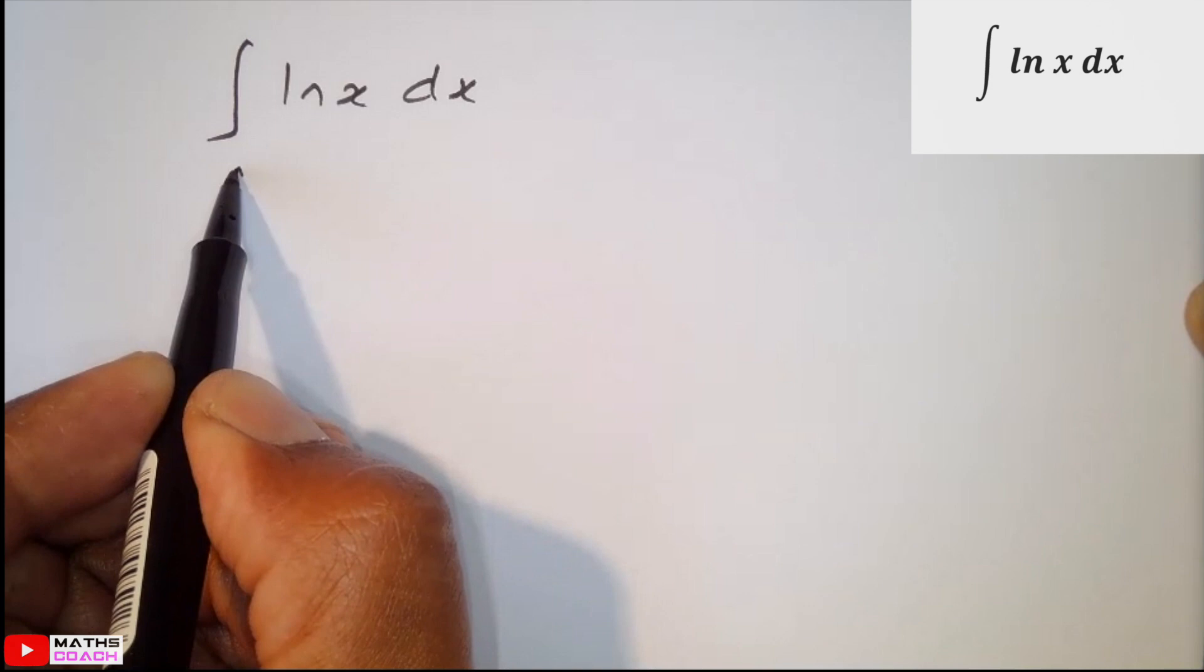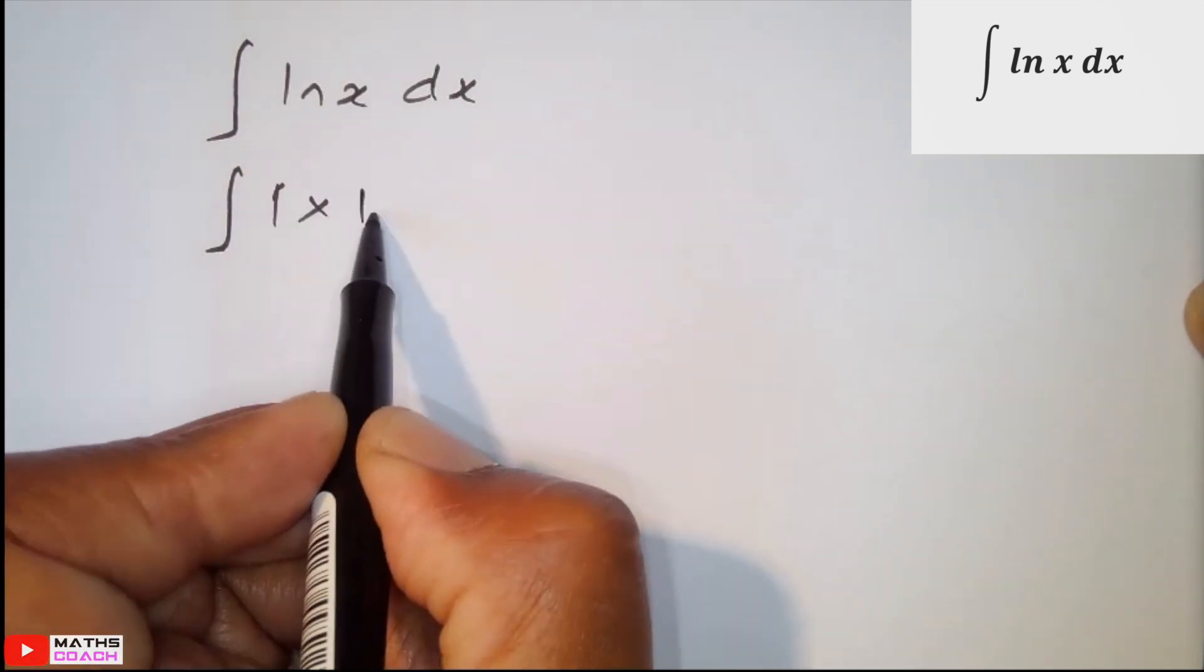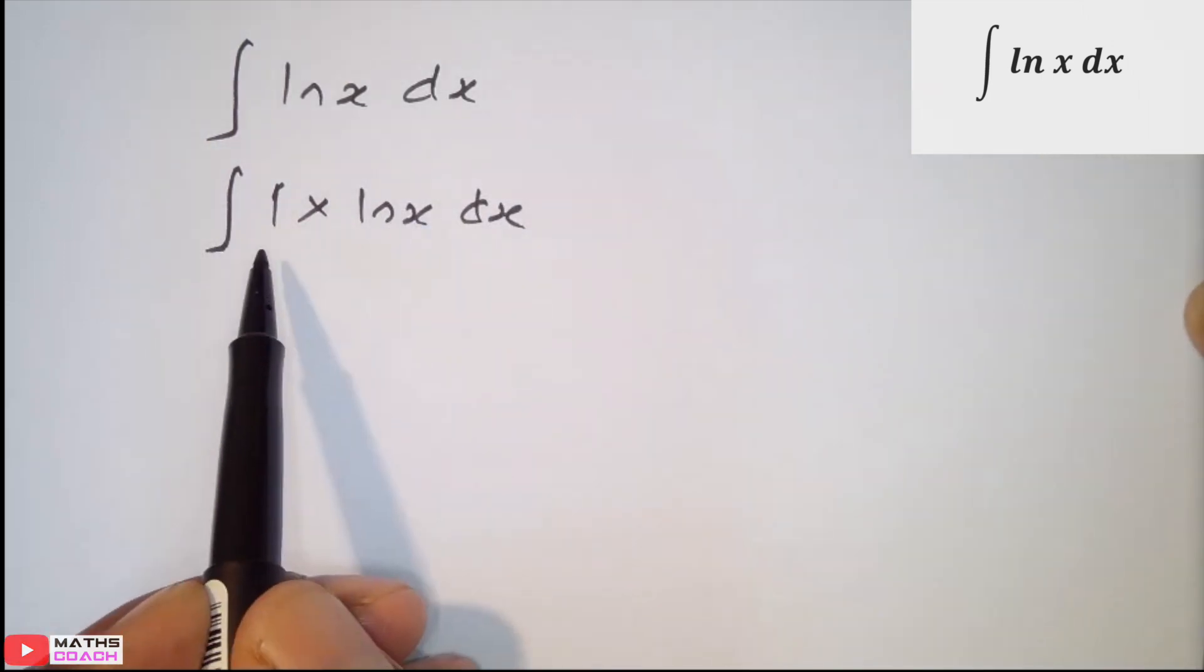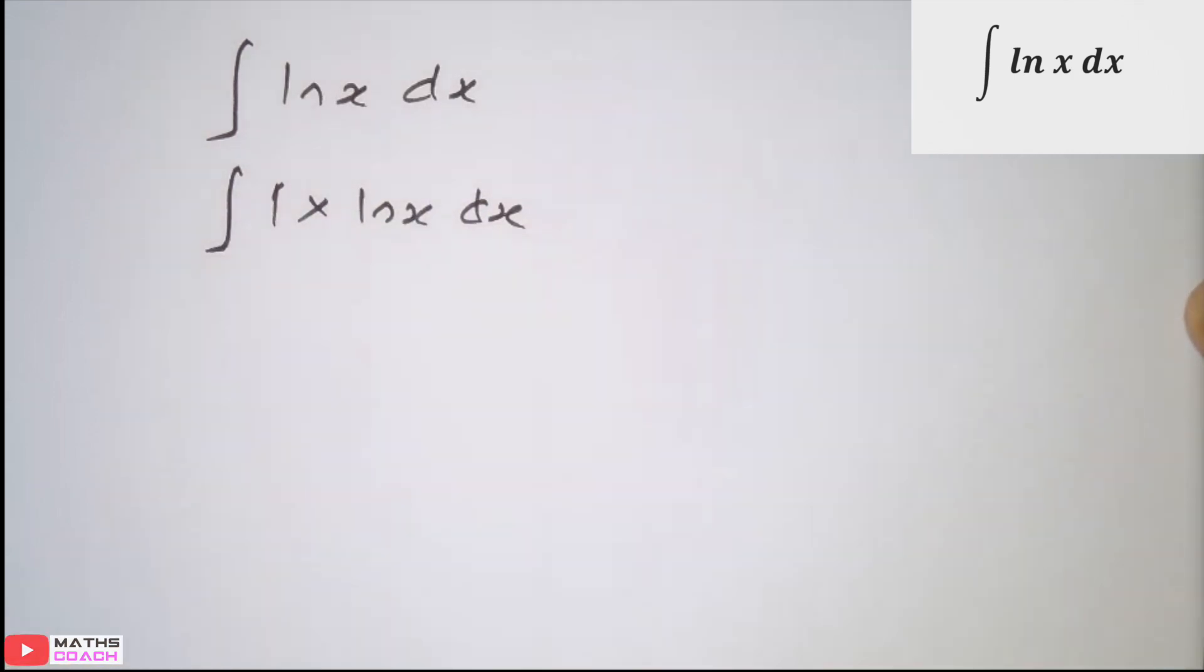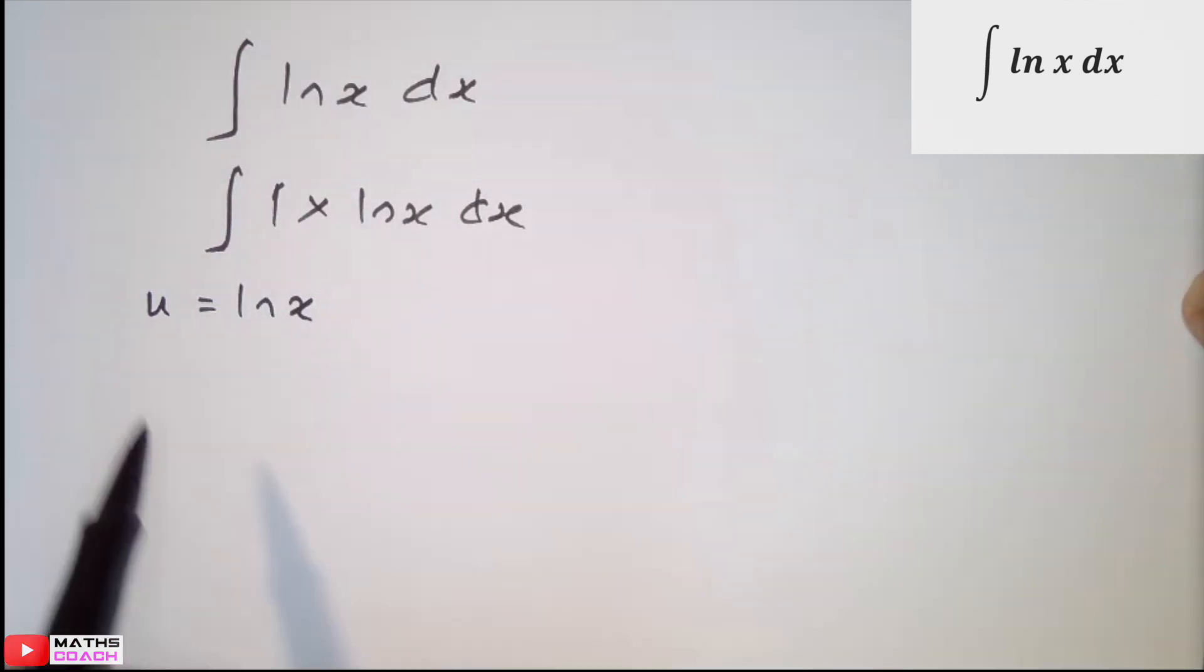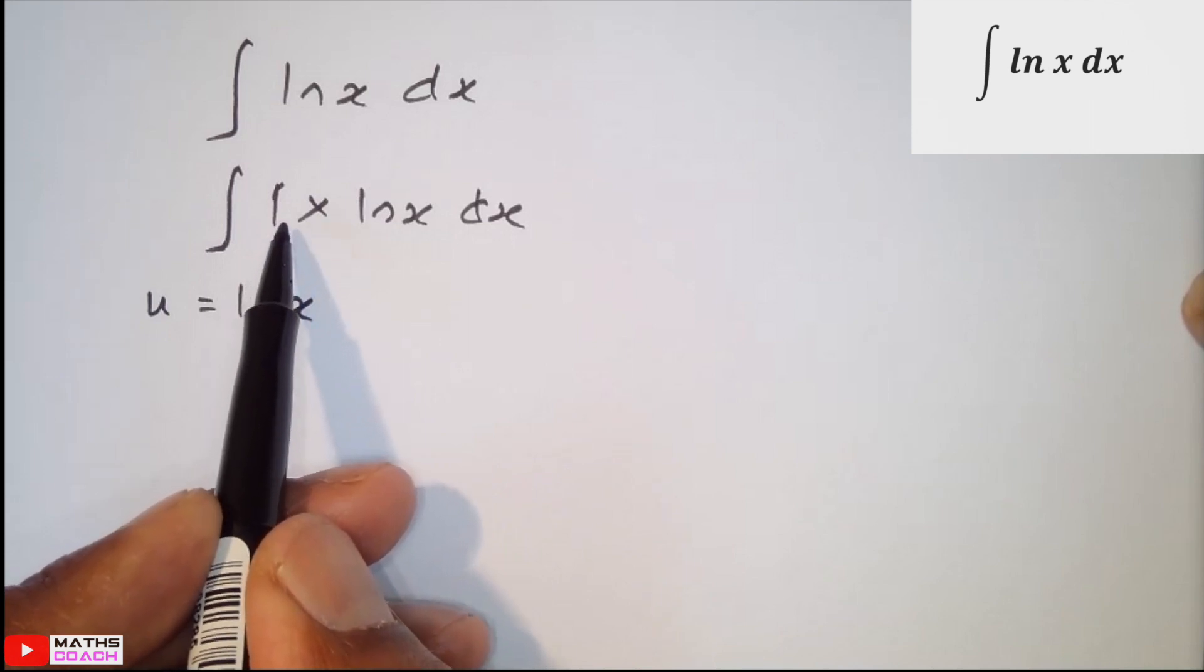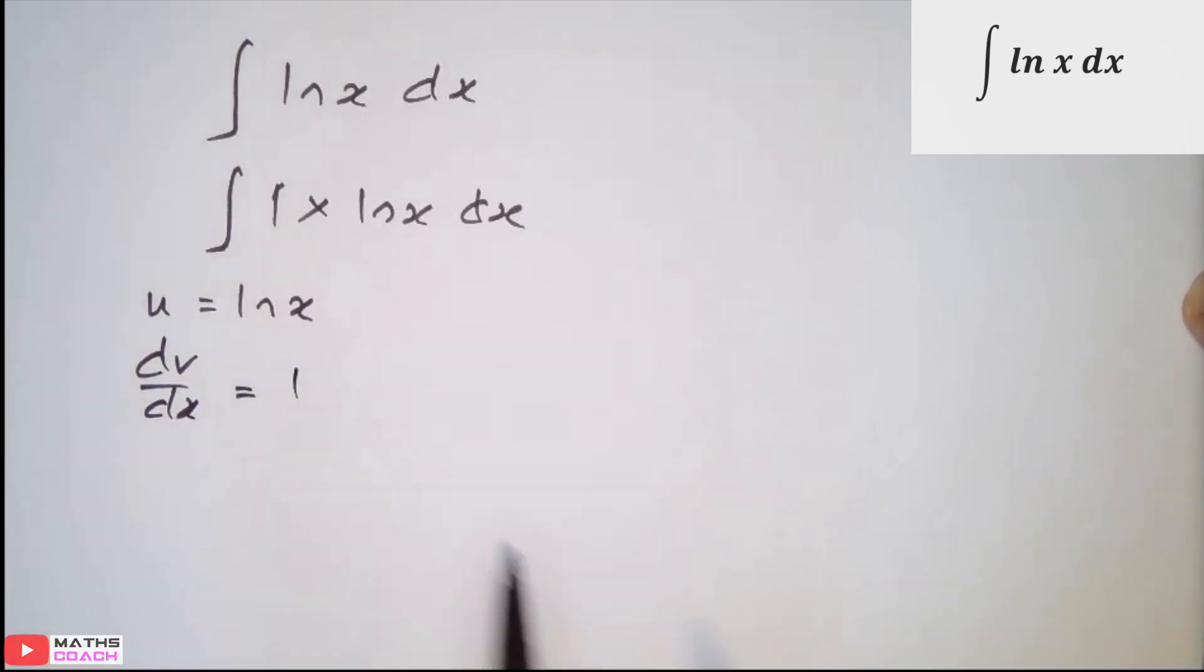So, ln x dx, one expression only. Integration by parts require two expressions. Slightly odd. As I said, ln x has exceptions. We can write this as 1 multiplied by ln x dx. Now, here I've got two parts. I've got the 1 and the ln x. Here, we can now open up the parts. So, because I've got ln x here, I can define u as ln x. And even though the other part of the question does not involve x, we can still define dv/dx as our constant 1.